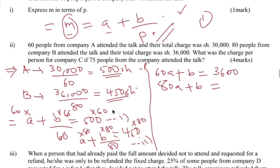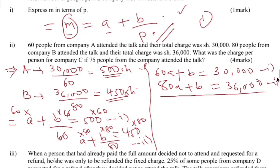So 500 times 60 is 30,000, and 450 times 80 is 36,000. Now subtracting equation one from equation two to eliminate b: 80a minus 60a gives negative 20a equal to 36,000 minus 30,000 which is negative 6,000. So a equals negative 6,000 divided by negative 20, which gives 300. So a equals 300.